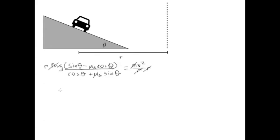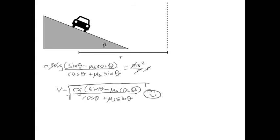Now we have that v is equal to r times g sine theta minus mu s cos theta all over cos theta plus mu s sine theta. And wait. There's that radical. Take the square root of the whole thing. And we get our answer.